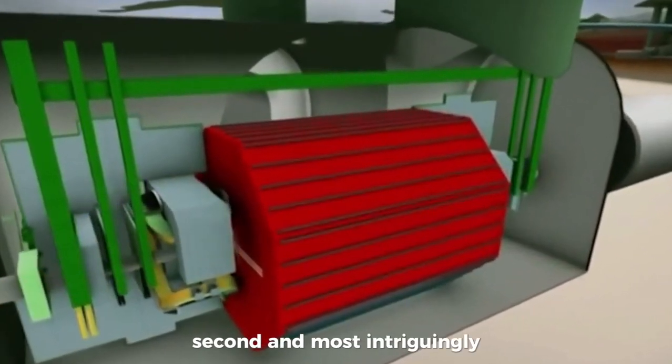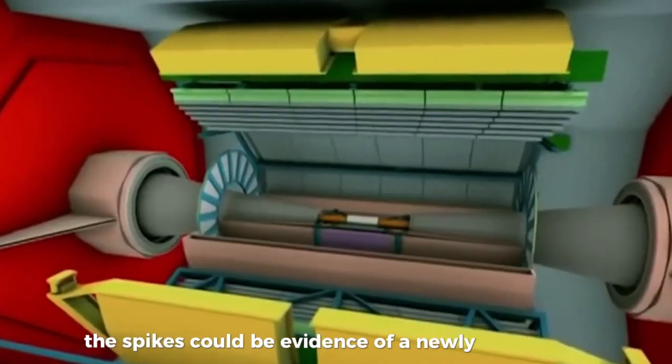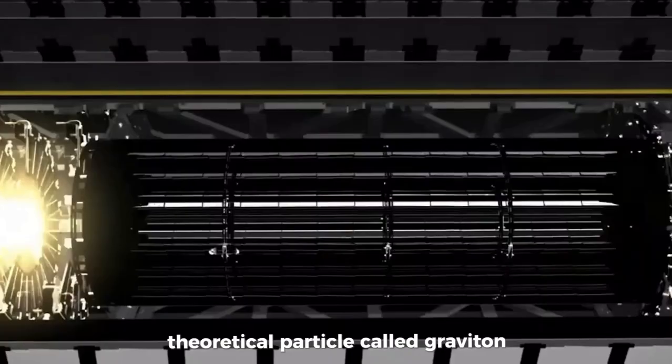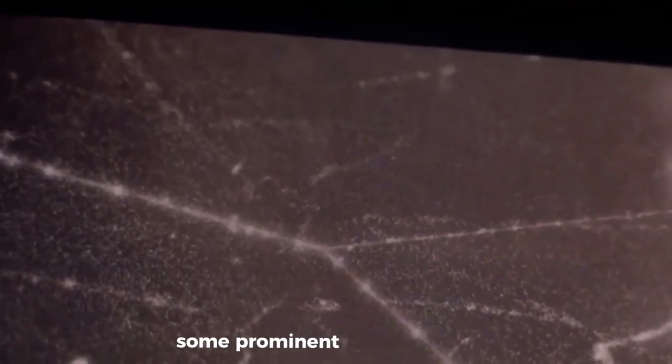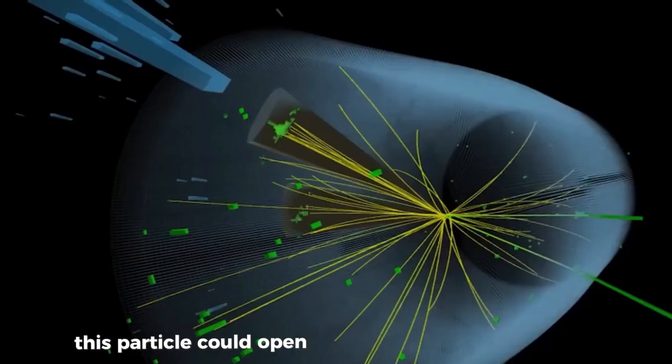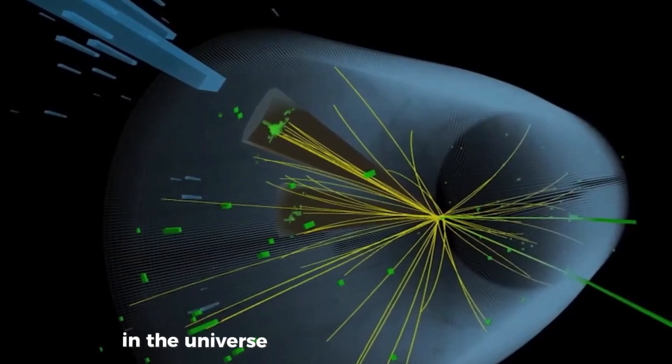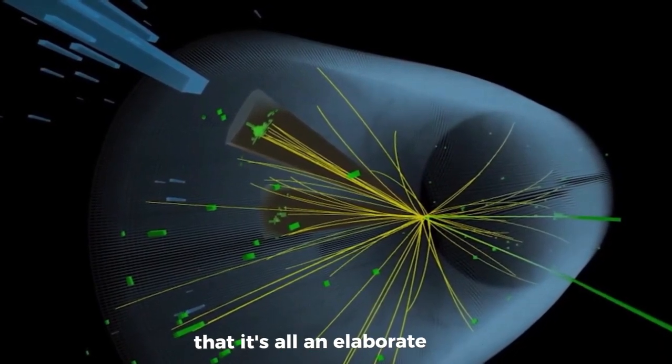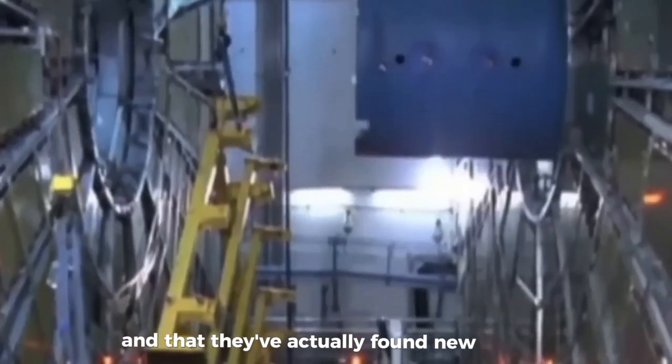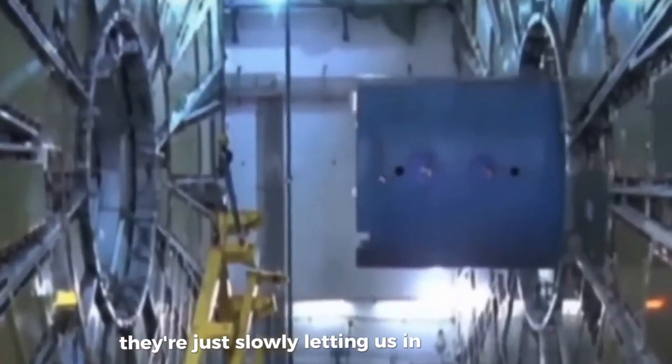Second and most intriguingly, the spikes could be evidence of a newly discovered theoretical particle called graviton. Graviton helps mediate all gravitational force. Some prominent scientists think this particle could open the door to other dimensions in the universe. But with what consequence? Others have even gone so far as to say that it's all an elaborate hoax and that they've actually found new worlds, they're just slowly letting us in on the secret.